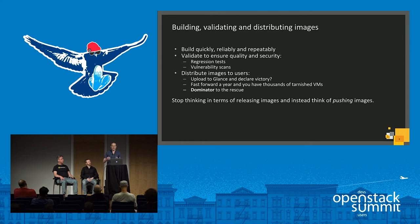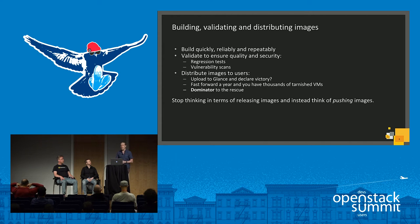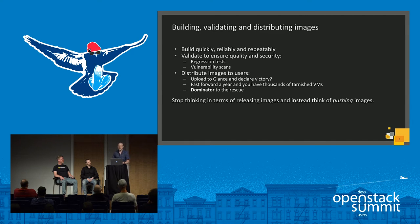Then it comes to actually distributing the images. Conventionally, people who are building image pipelines say, okay, I upload my image to Glance and I declare victory — I'm done for the day, it's 5pm, everything is good. But then fast forward a year and you have thousands of tarnished VMs because they haven't been updated. They're stale, there are lots of vulnerabilities, and suddenly we're in a crisis.